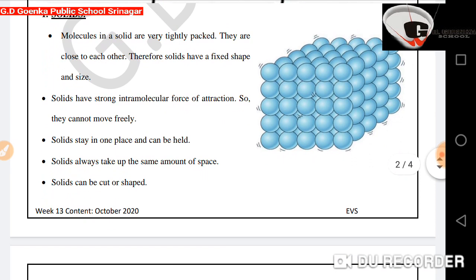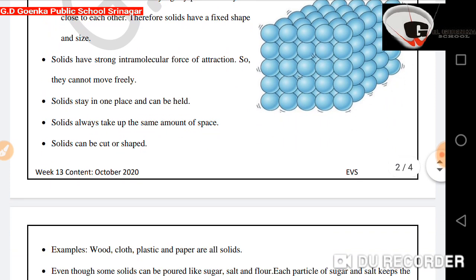Solids. Molecules in a solid are very tightly packed. They are close to each other. Therefore, solids have a fixed shape and size. Solids have strong intramolecular force of attraction, so they cannot move freely. Solids stay in one place and can be held. Solids always take up the same amount of space. Solids can be cut or shaped.